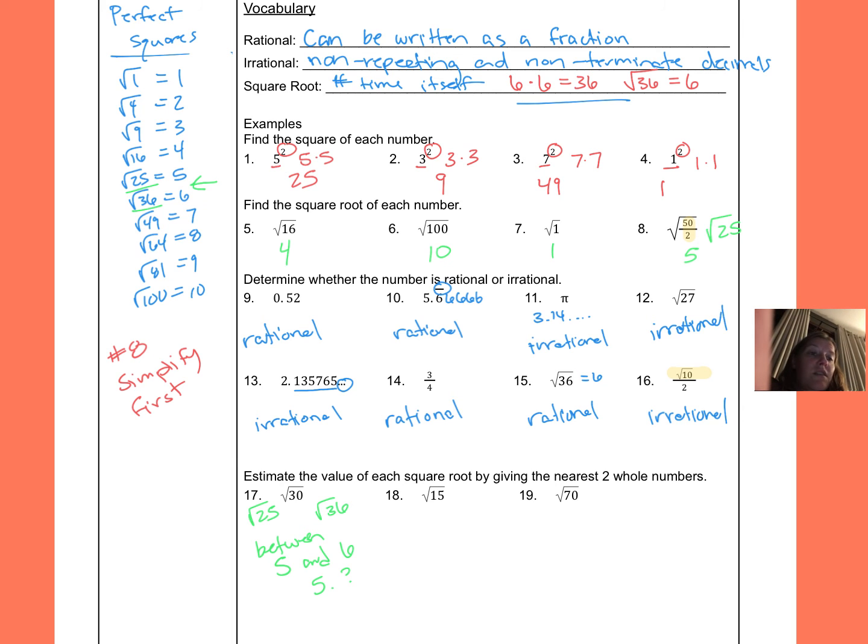Number 18, square root of 15. So 15 would fall on my list between 9 and 16. So square root of 9 is the smaller one, square root of 16 is the next one bigger. Square root of 9 is 3, and square root of 16 is 4. And since 15 is right in between here, the number is going to be between 3 and 4 somewhere. And 15 is very close to 16, so it's going to be closer to the 4. So maybe 3.8, 3.9, something around there.